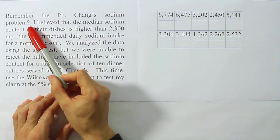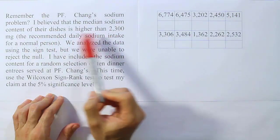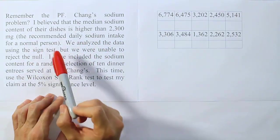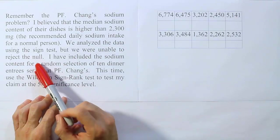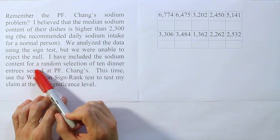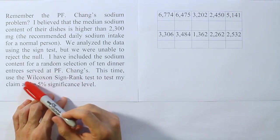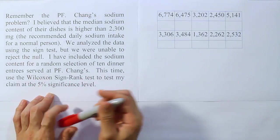Remember the PF Chang's sodium problem? I believe that the median sodium content of their dishes is higher than 2300 milligrams, the recommended daily sodium intake for a normal person. We analyzed the data using the sign test but were unable to reject the null. I've included the sodium content for a random selection of 10 dinner entrees served at PF Chang's. This time, use the Wilcoxon signed-rank test to test my claim at the 5% significance level.